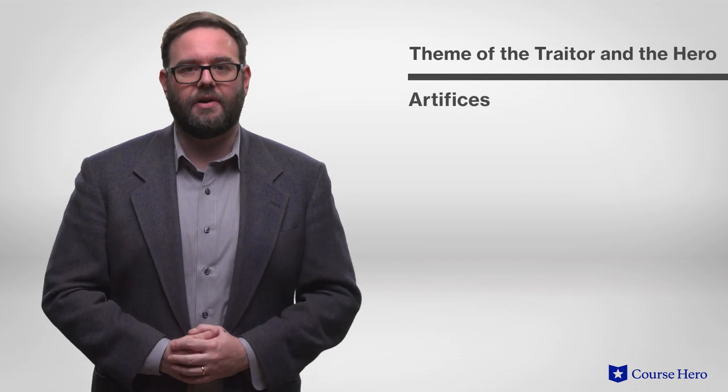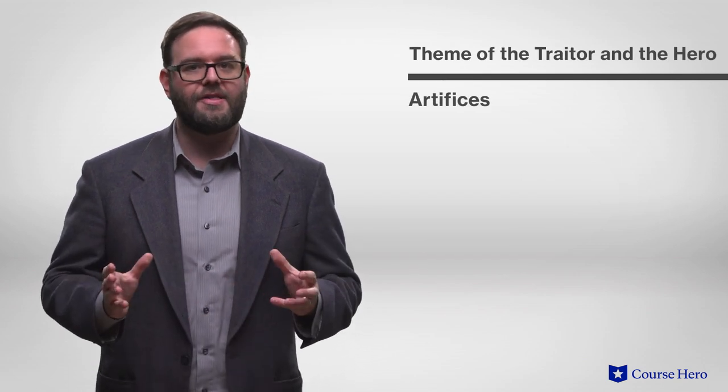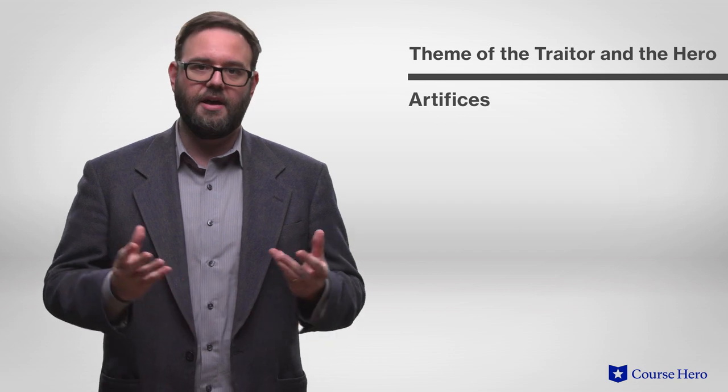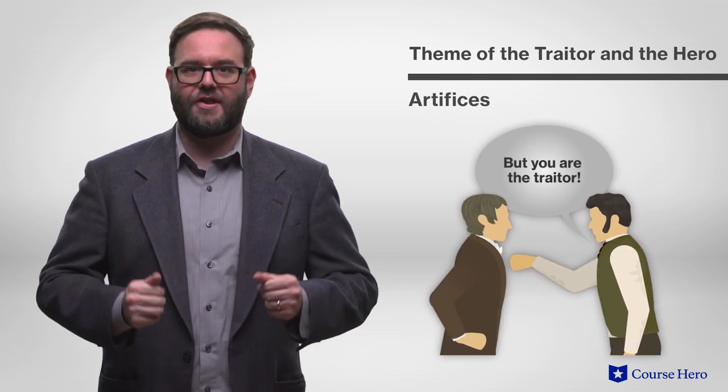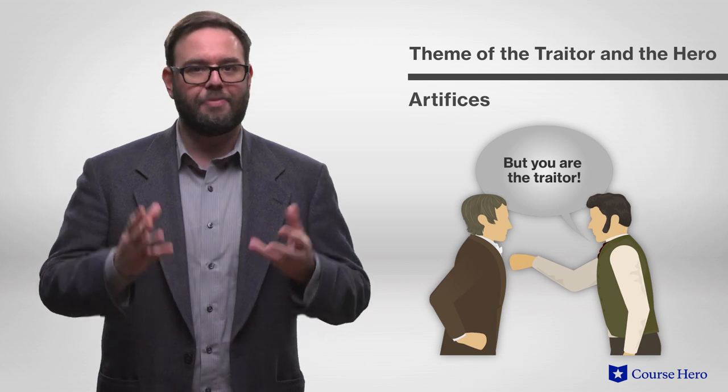In Theme of the Traitor and the Hero, the narrator proposes a basic future story in which a descendant, Ryan, discovers Fergus Kilpatrick was a traitor who arranged to have himself assassinated in a dramatic way that would inspire future generations.